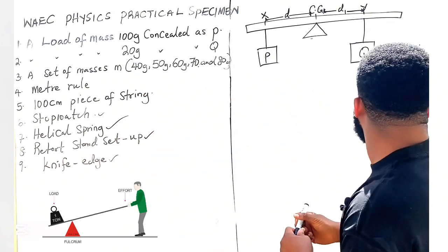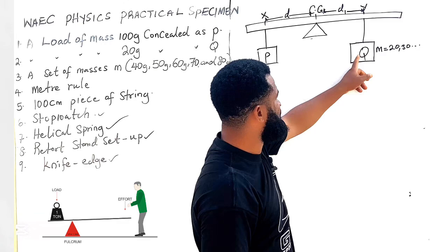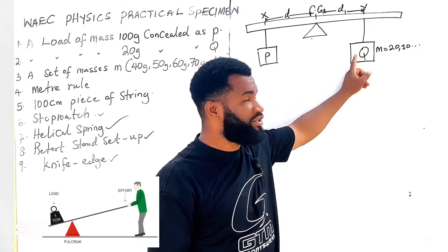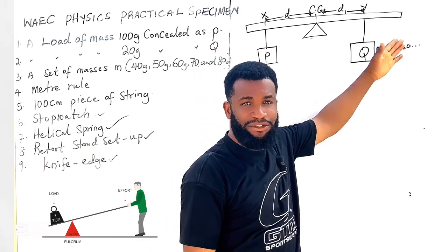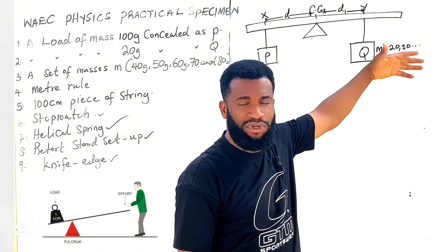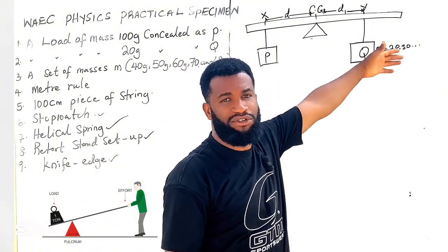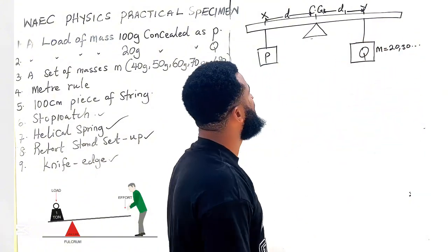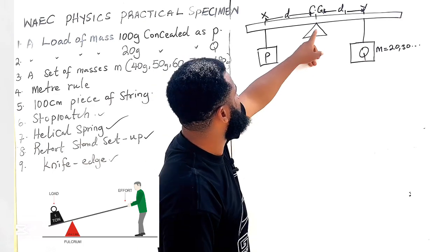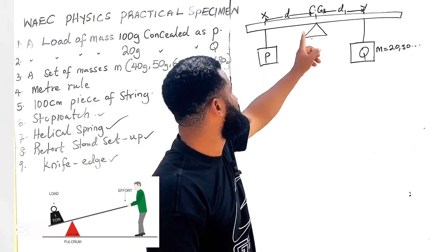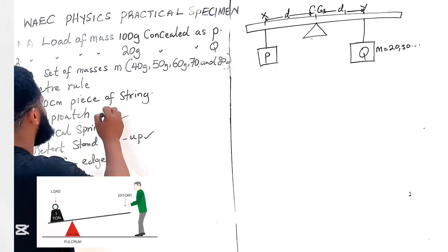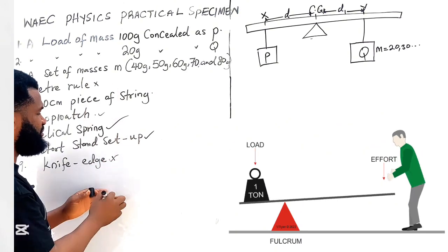Then a load of mass 20 gram concealed and labeled as Q, which is this Q. They may ask you to just be changing the values for Q, which can be 20, 30, 40, 50, depending on the variables that are going to be given for that mass, and then you may be asked to find the center of gravity of the meter rule.